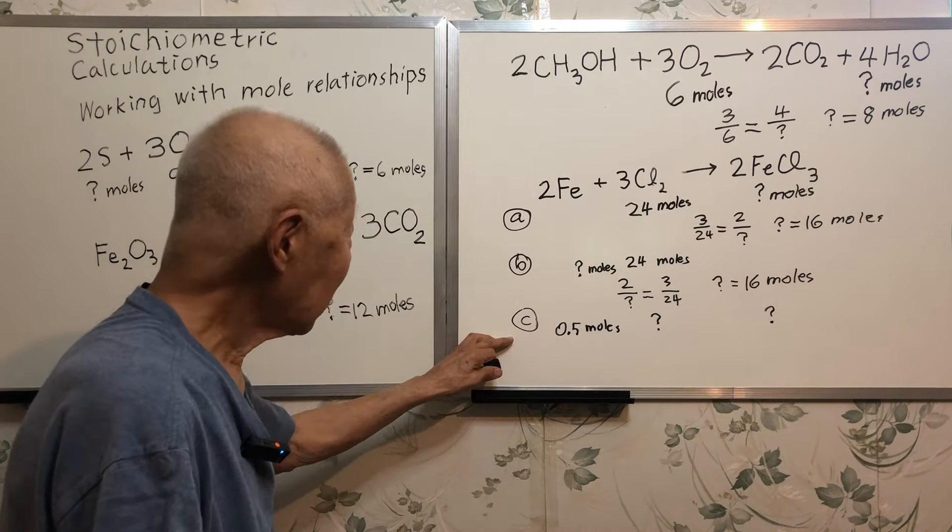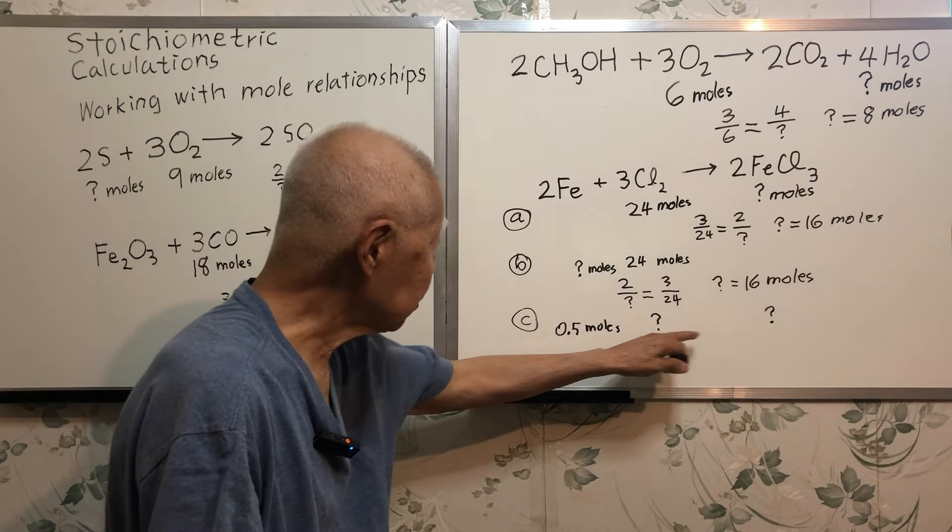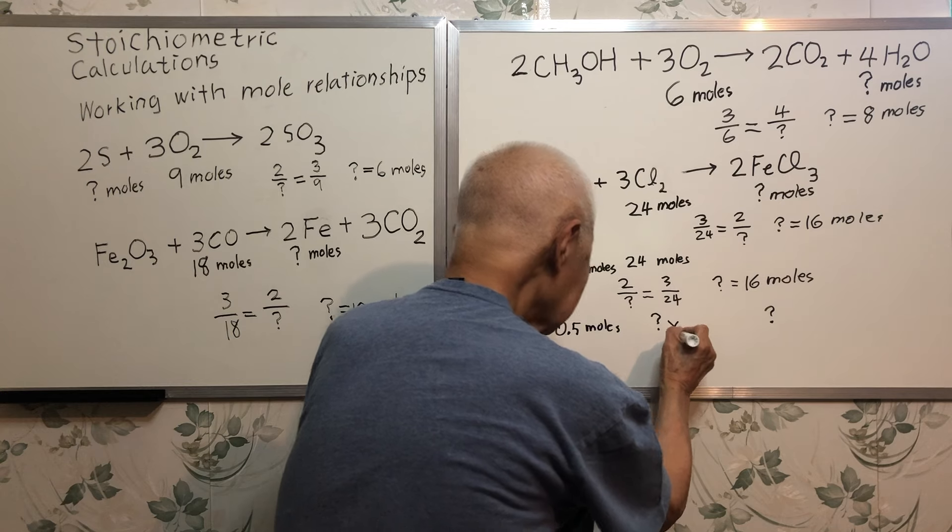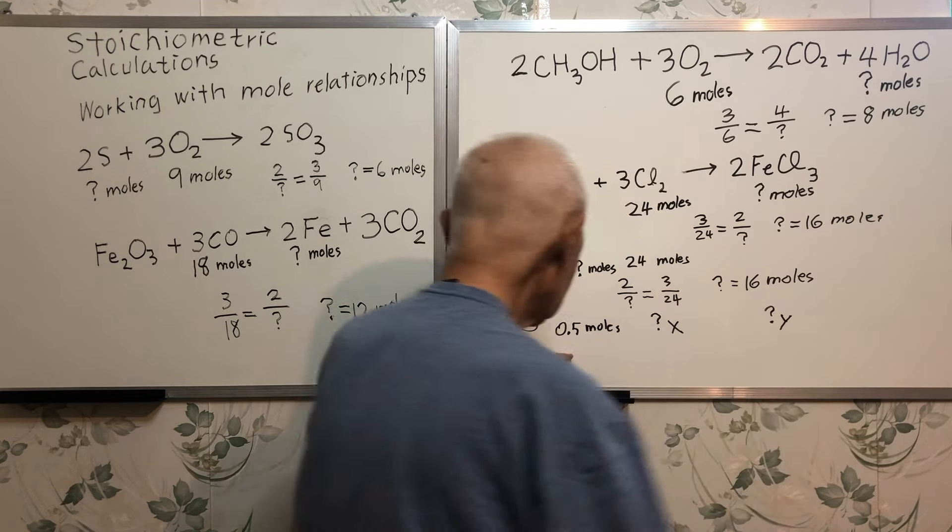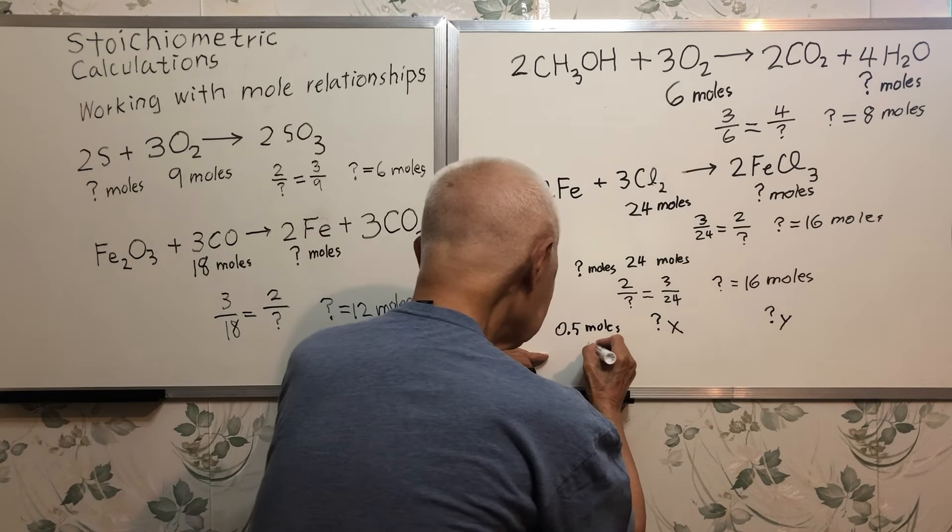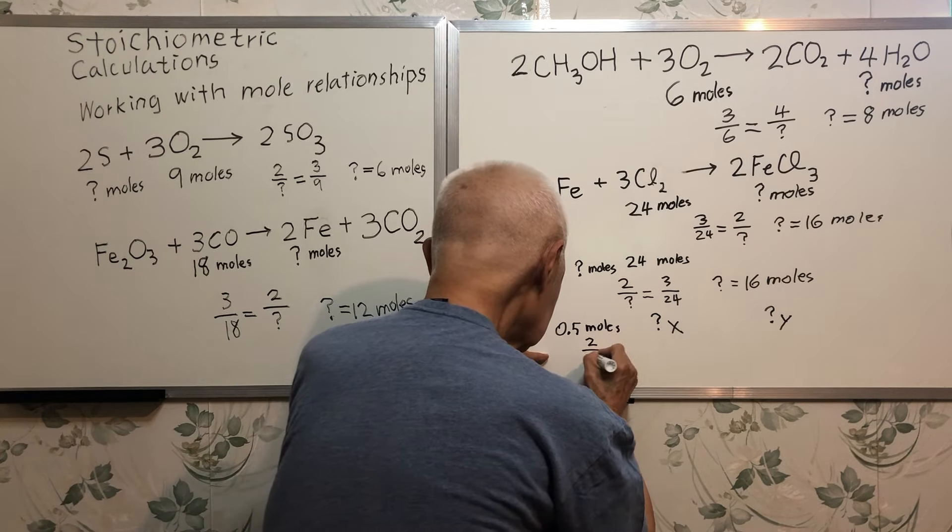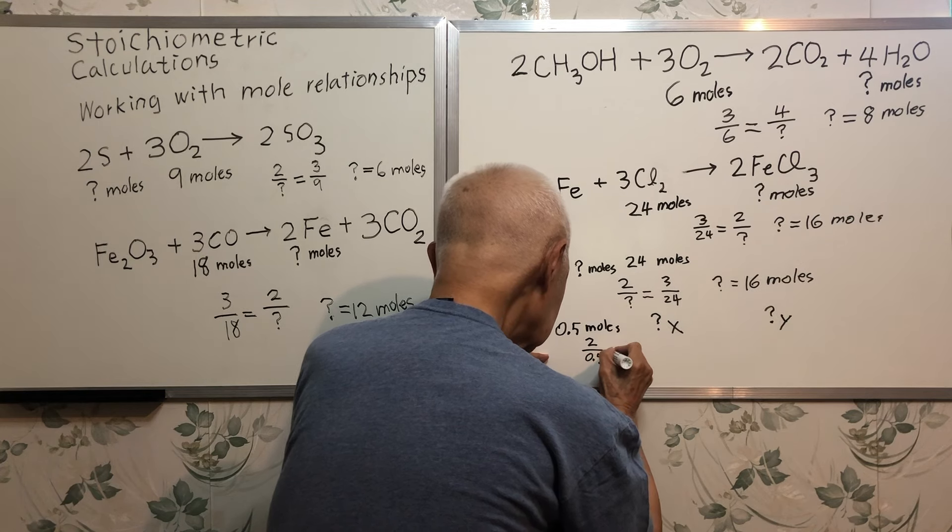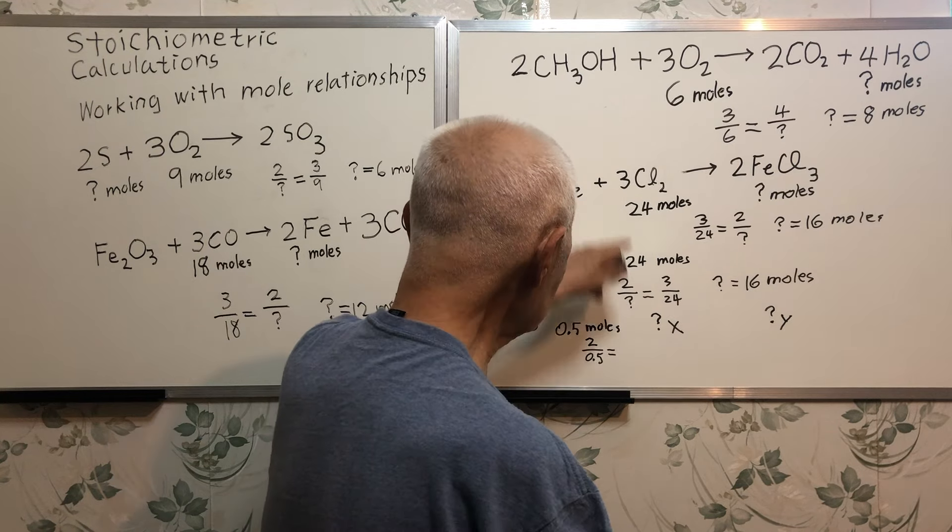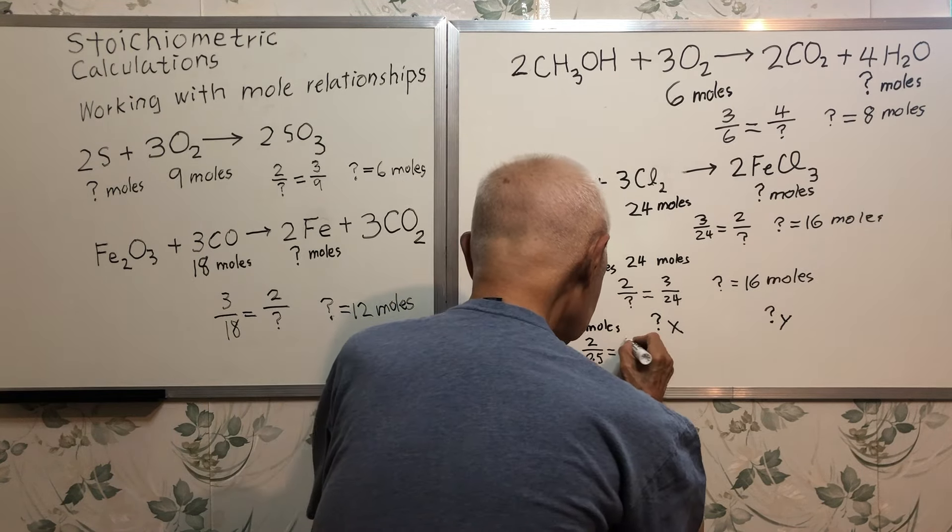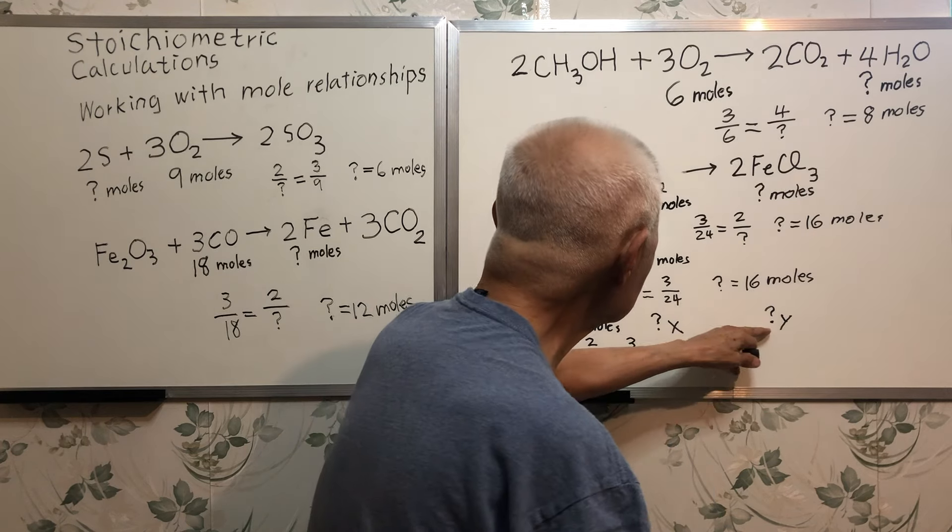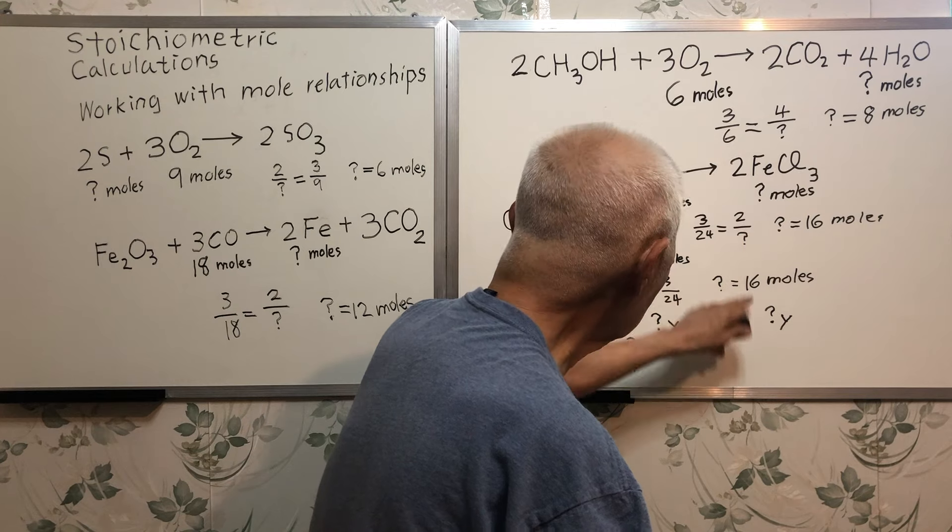For part C, I want two answers. Let's call this x. Let's call this y. So 2 over 0.5 is equal to, this is 3, 3 over x. It is also equal to 2 over y.